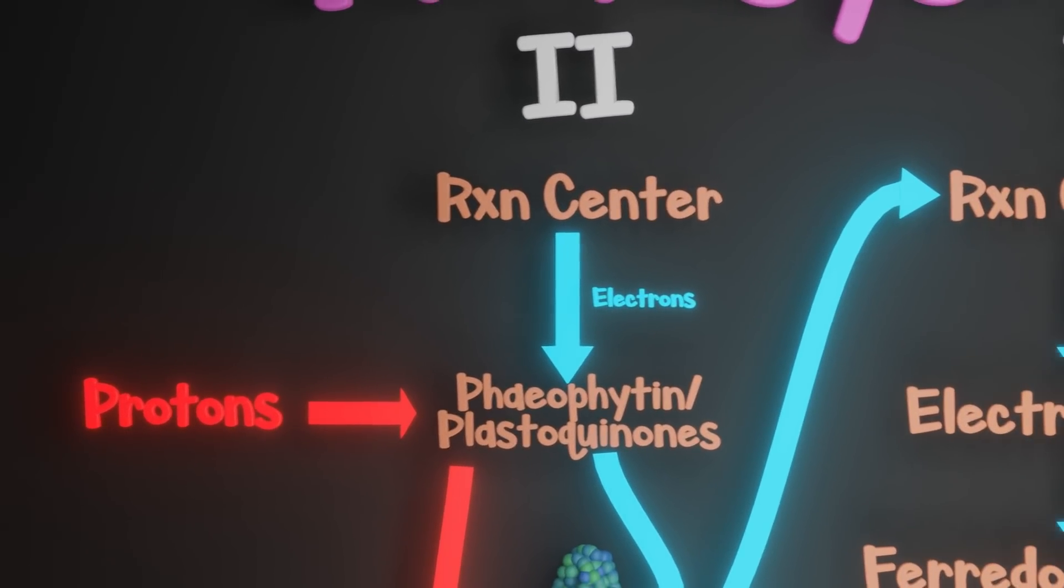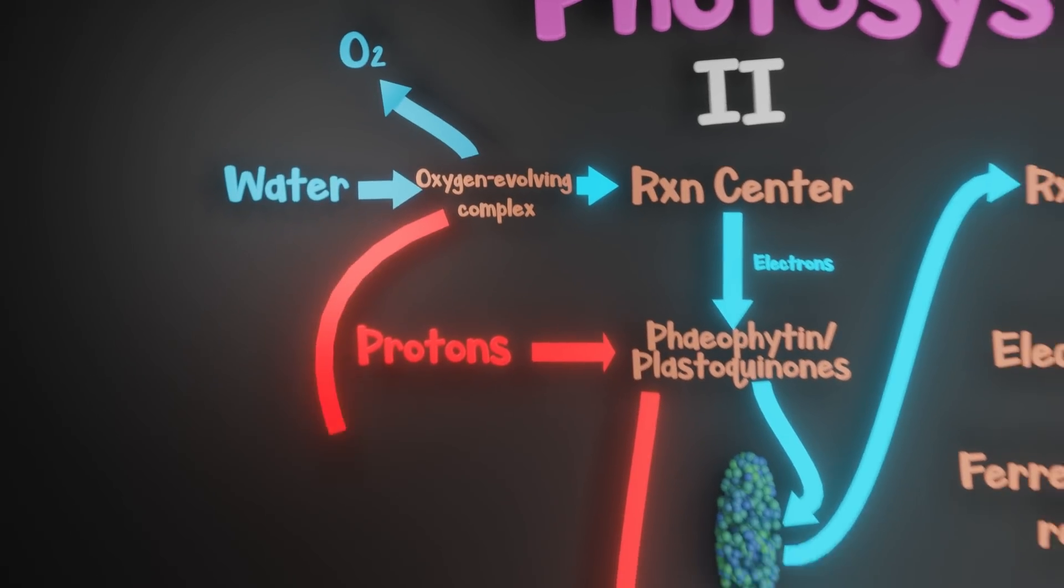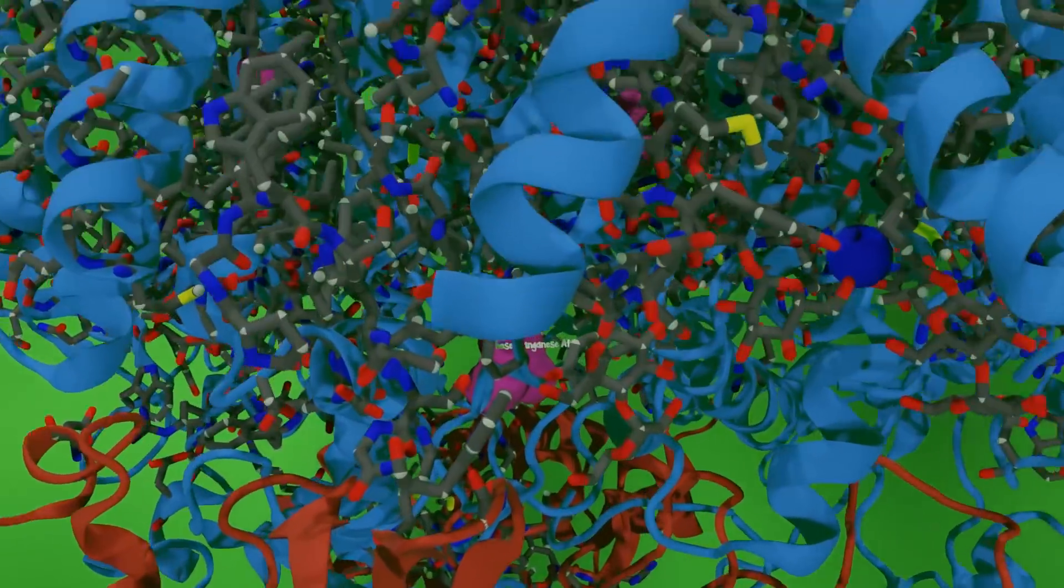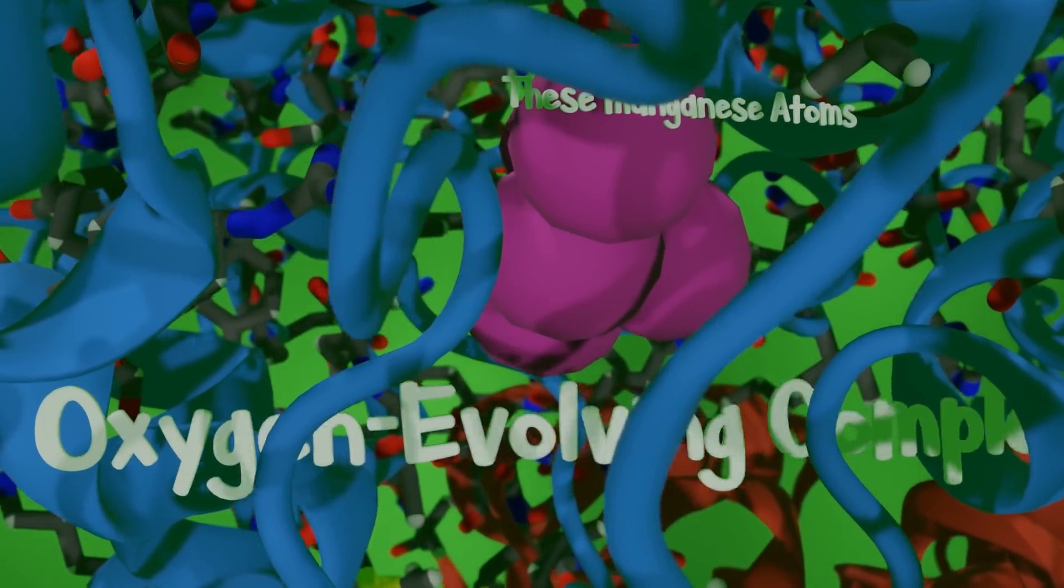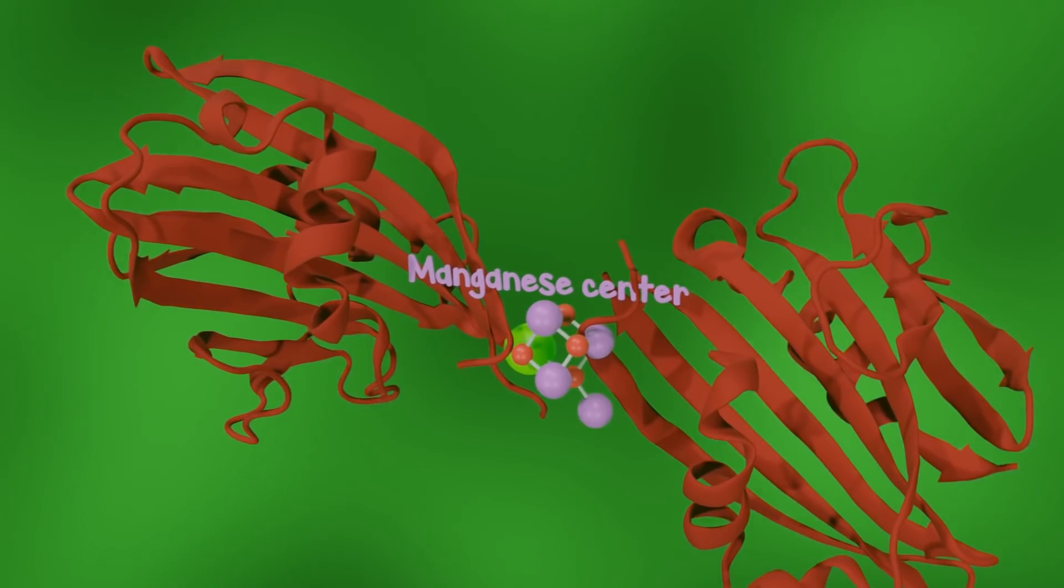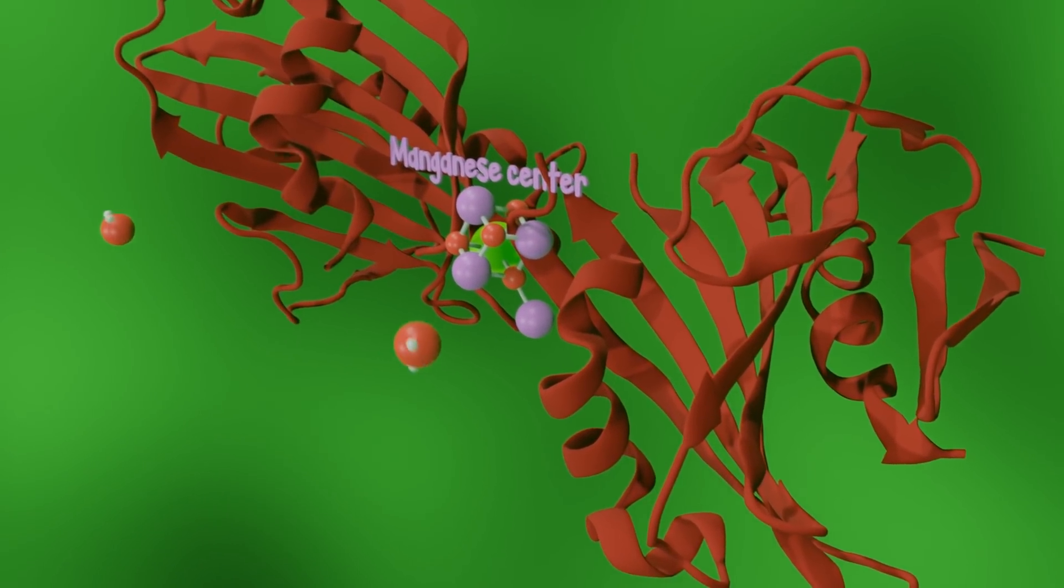This is accomplished by splitting water into oxygen and more protons for our proton pumps. One of these little lumps of proteins in photosystem II is yet another protein complex, called the oxygen-evolving complex.